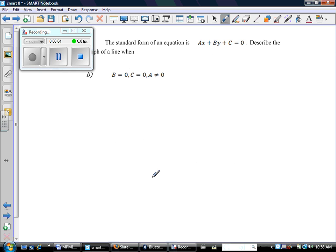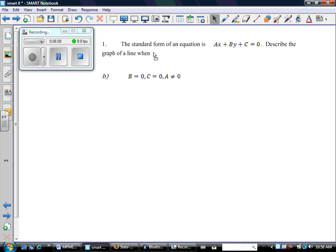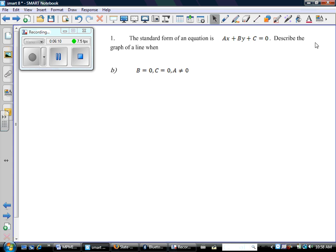Let's look at part B of this question. So part B again reminds us what the standard form equation looks like and then gives us some new parameters. This time it says B = 0, C = 0, and A can't be 0.